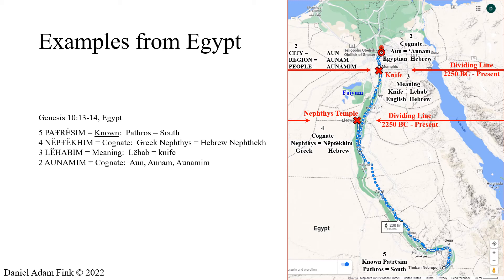Just north up from that X is a circle that is On. Onam is the province around the city On — On being Heliopolis, the sacred city of Egypt. This is where Joseph is married in Genesis. Between Memphis and On is modern Cairo. This is the capital district of Egypt and it has been for thousands of years. So in review, Egypt: five, Patros, name meaning south; four, Nephtis/Nephtachim, cognate; three, Lahab, name meaning knife — that is the district which divided upper and lower Egypt; two, Onam/Onamim, the people from the province of On.